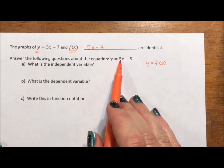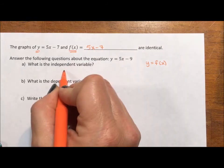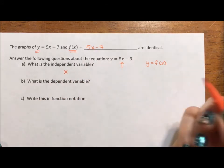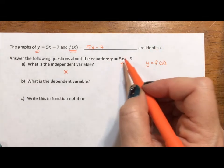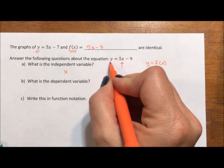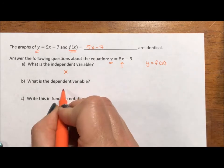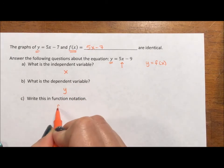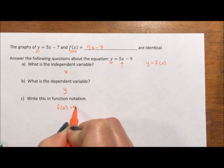So if this is our equation, the independent variable is x. It's independent because it's hanging out with all its friends, and it's the value we substitute in. The dependent value is always the variable that's off by itself, so our dependent variable is y. And the function notation, we would just say f of x equals 5x minus 9.